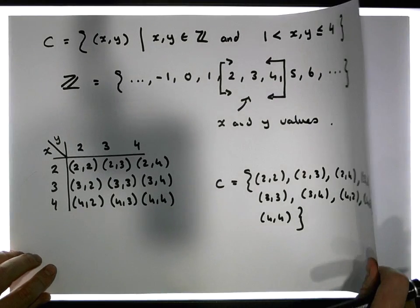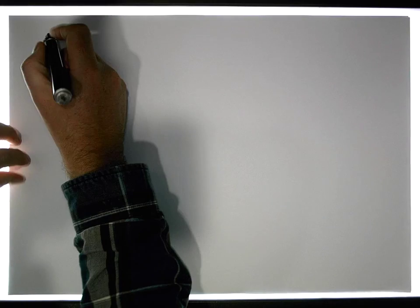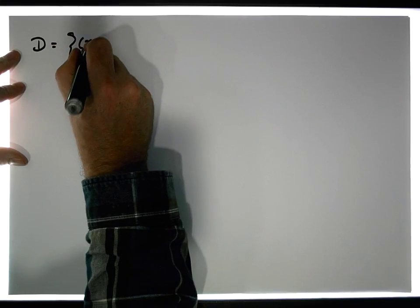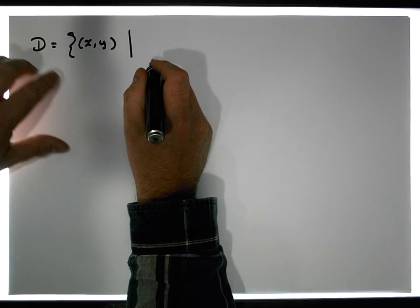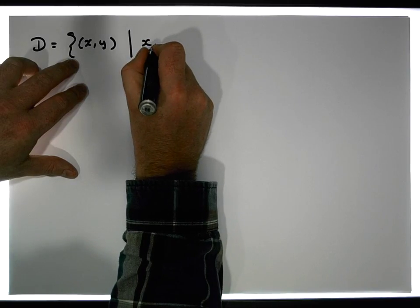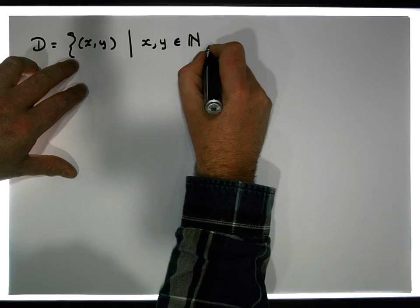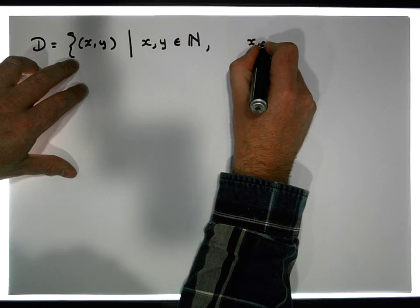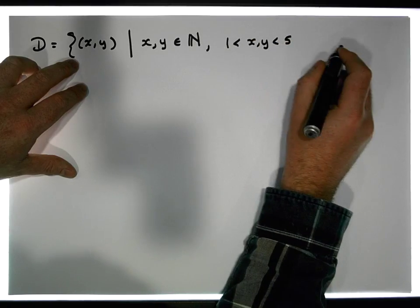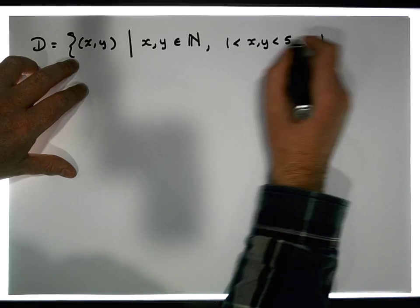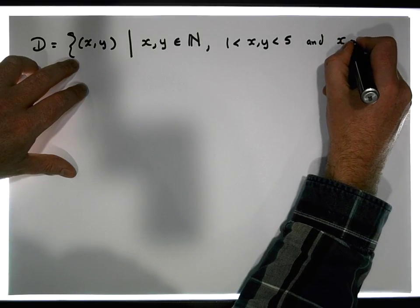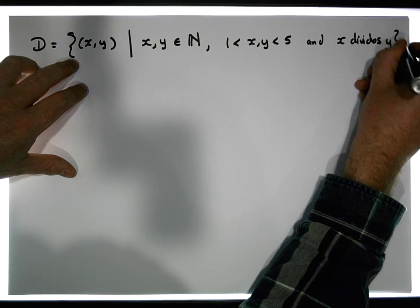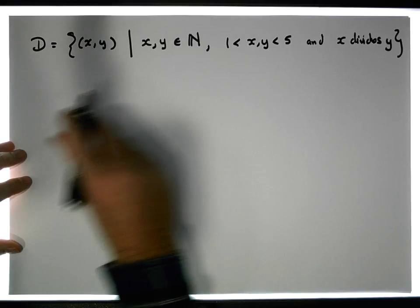Let's do one final example, keeping with the ordered pairs scenario. Let's say D is the set of ordered pairs (x, y) such that x and y are elements of the natural numbers, x and y are less than 5 and bigger than 1, and also x divides y.